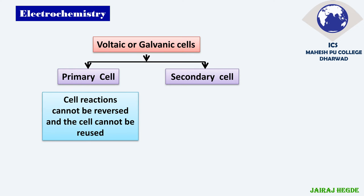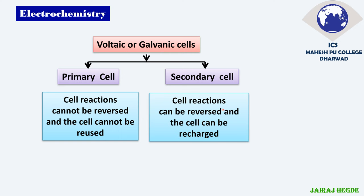What is a primary cell? Primary cells are those cells in which cell reactions cannot be reversed, so they cannot be reused. In simple words, primary cells are used-once cells which cannot be recharged and reused. Secondary cells are those cells which have cell reactions that can be reversed and the cell can be recharged by supplying a higher potential than the potential of the cell — that's why we can use them again and again.